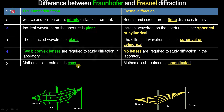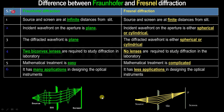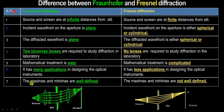In Fraunhofer diffraction, the mathematical treatment is easy because all rays are incident at the same angle of incidence, so we don't have to consider separate angles. But in Fresnel diffraction, all incident rays have different angles of incidence, so each ray's angle must be considered, making it complicated. Additionally, Fraunhofer diffraction has many applications in designing optical instruments, while Fresnel diffraction has fewer. Finally, Fraunhofer diffraction has well-defined maximas and minimas, while Fresnel diffraction has maximas and minimas that are not well defined.